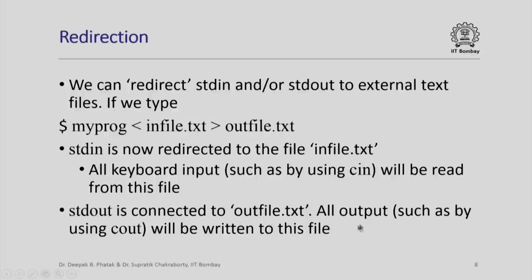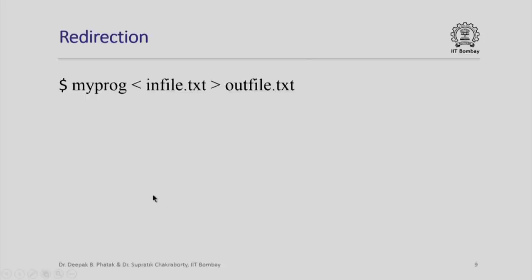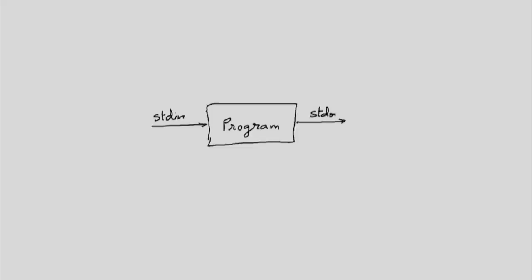So all output such as that produced by using cout will now be written to this file. Let us look at the redirection diagrammatically. When we issue the command myprog < infile.txt > outfile.txt, as usual our program would be given two files stdin and stdout. However, when we use redirection, stdin is connected to an input file and so is stdout.